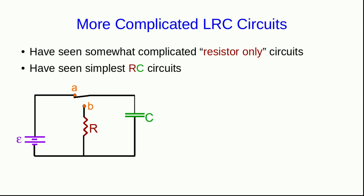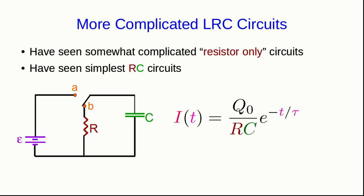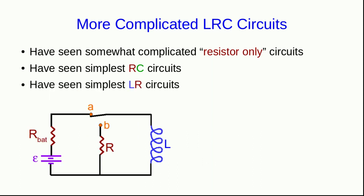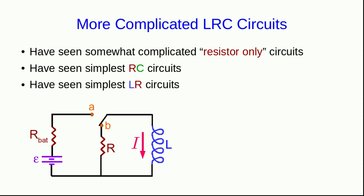For example, here we know that if the switch has been in position A for a while, the capacitor is charged, and when we flick it to B, there is a current that is an exponential decay with a time constant we know how to find. And similarly, for LR circuits, when the switch has been in position A there is a current through the inductor, and when we flick it to B, that current again decays exponentially with a time constant that we know how to find.